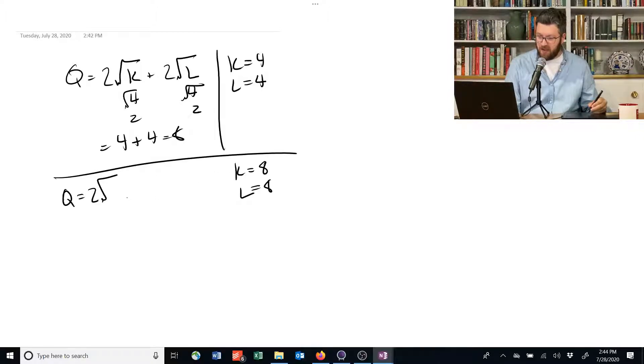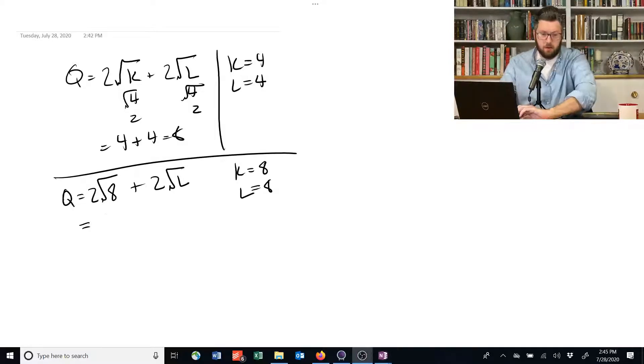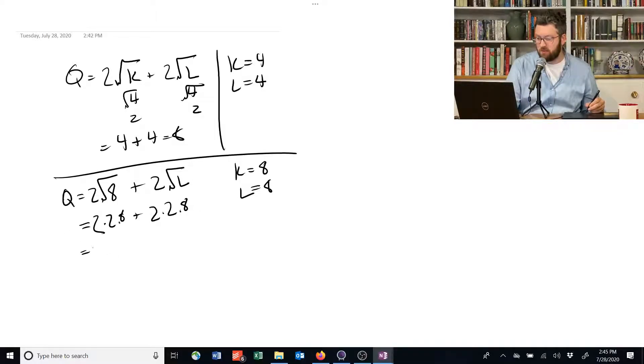If we substitute in for K, 8, we get this. And L is also 8. We end up with these guys here. And the square root of 8 is about 2.8. So we now have 2 times 2.8 plus 2 times 2.8. This is equal to 5.6, if I'm not mistaken, plus 5.6. Add those two together, we get 11.2.